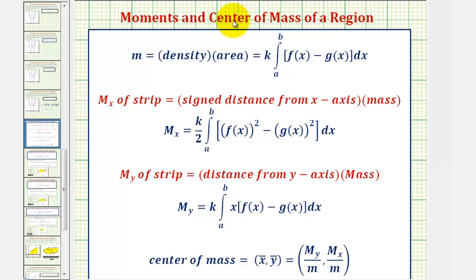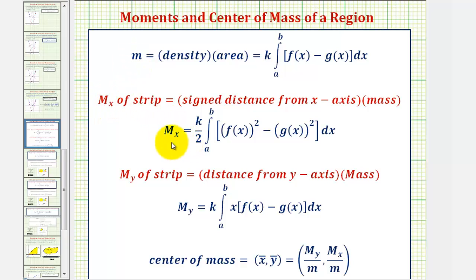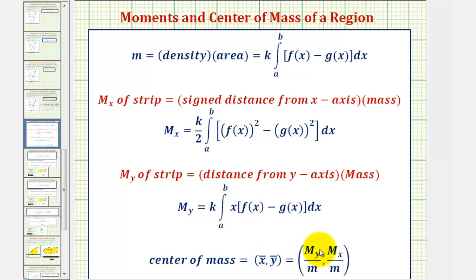To find the centroid, we'll first determine the total mass, which is equal to density times area. Since our density is uniform, we'll use the constant k for density. This integral will give us the area, so this product will be the total mass. The moment about the x-axis is given by this integral, and the moment about the y-axis is given by this integral. Once we have the mass and the moments, we can determine the coordinates of the centroid: x-bar equals the moment about the y-axis divided by m, and y-bar equals the moment about the x-axis divided by m.